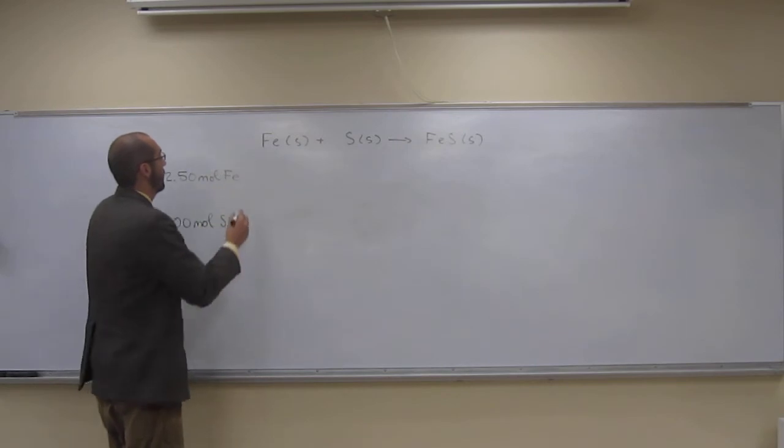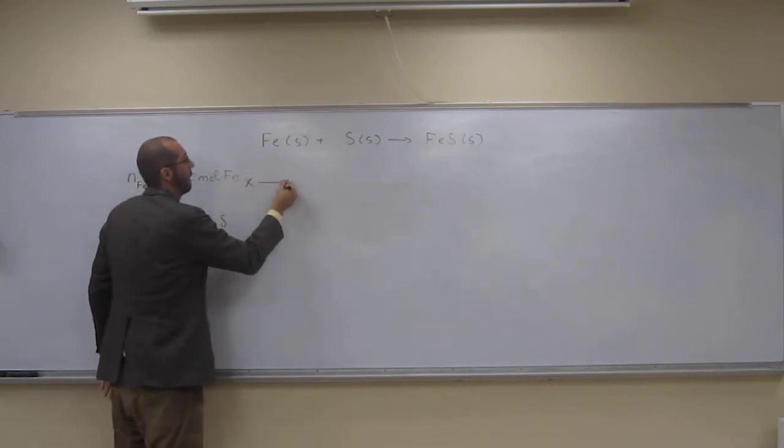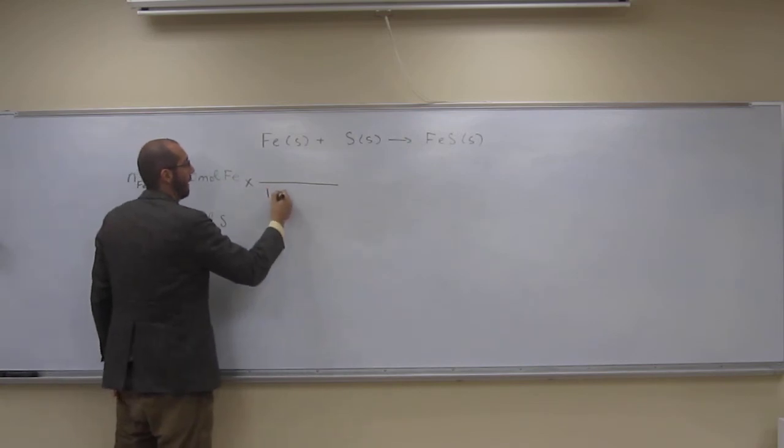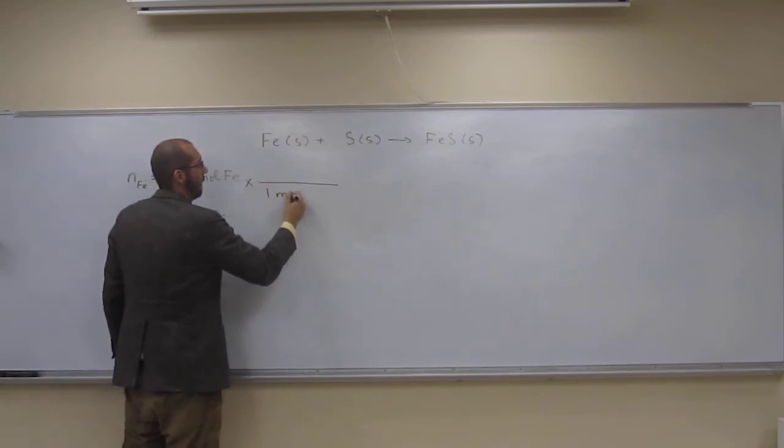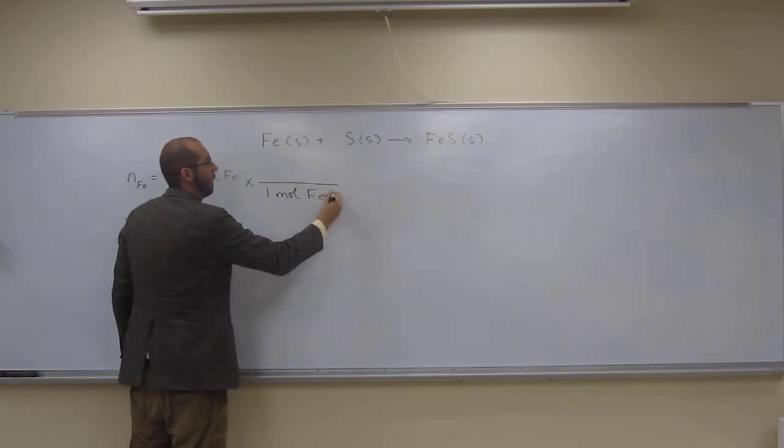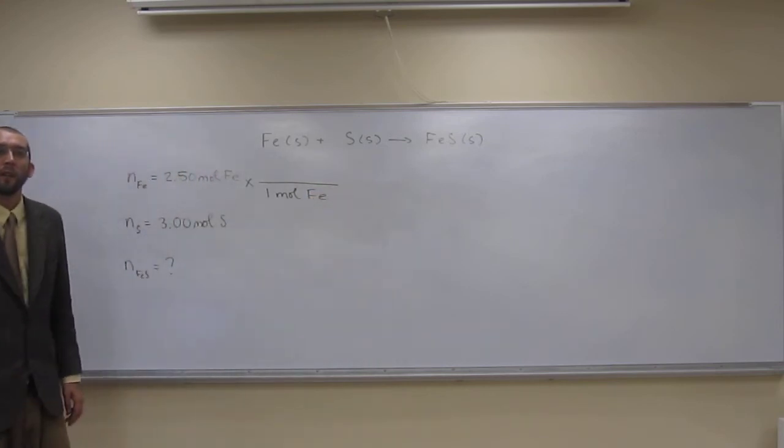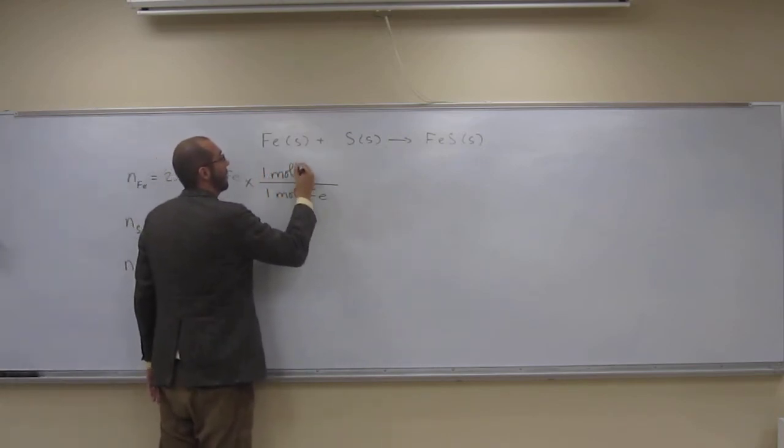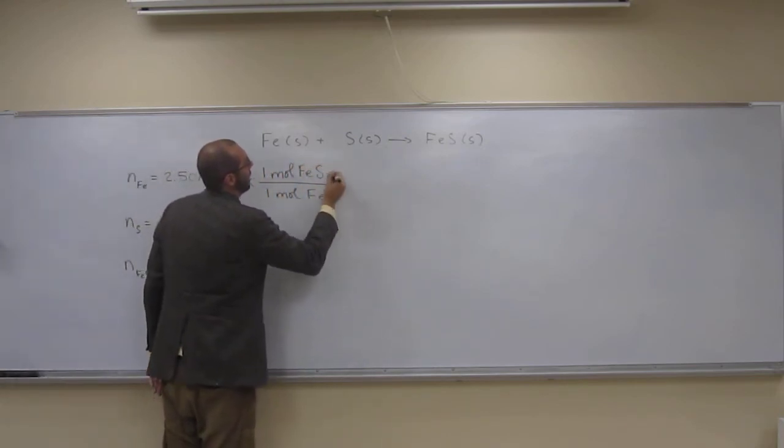So what are we going to do? Here, we're going to multiply it by what? On the bottom here is what? One mole of iron. Everybody, help me out. One mole of iron. Is that right? One mole of iron? And what about the top? One mole. One mole of iron sulfide. One mole of iron sulfide, right? Just like I just told you guys.